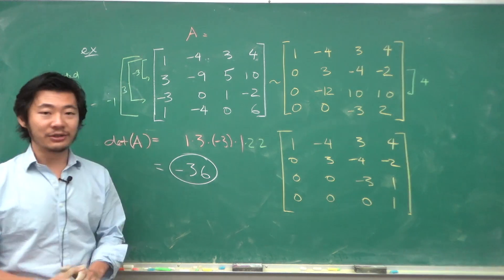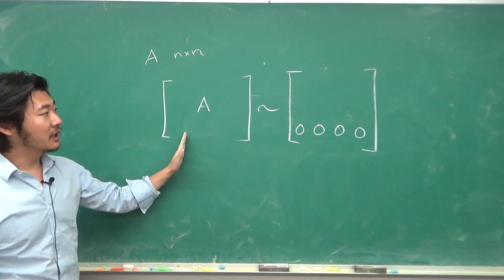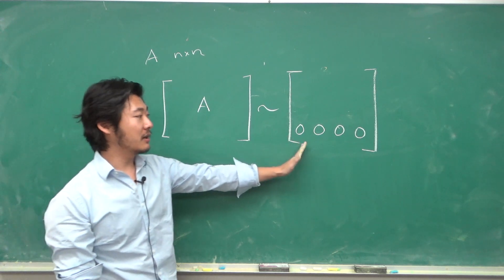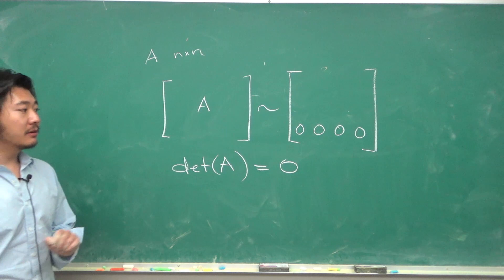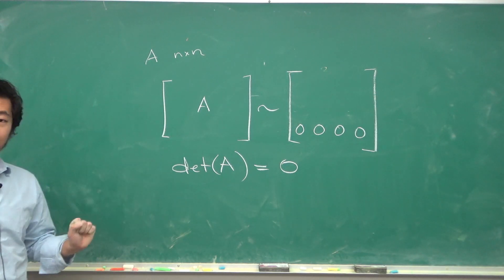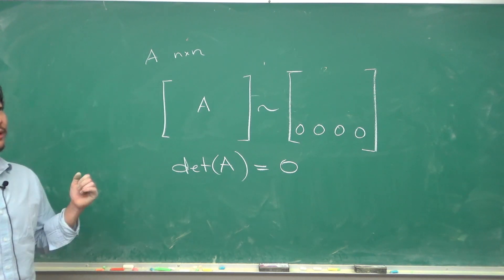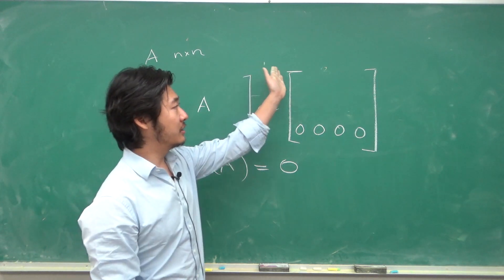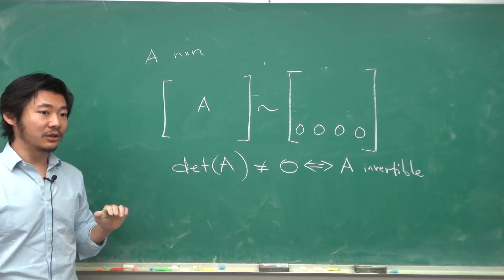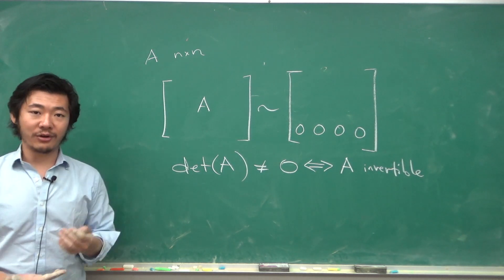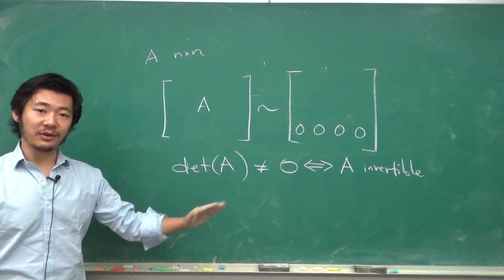So what is the determinant actually determining? For a square matrix, the columns are linearly dependent if row reduction yields a row of all zeros, and in that case the determinant is zero, meaning the matrix is not invertible. Conversely, a matrix is invertible if and only if its determinant is non-zero, because row reduction will give an echelon form with non-zero diagonal entries. So the determinant tells you whether A is invertible.